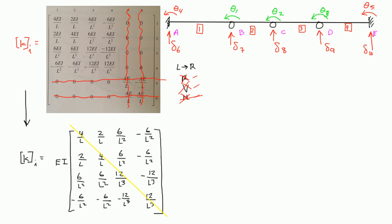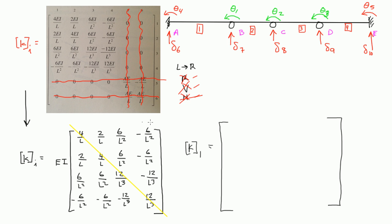So let's start with element one, and please notice how I label the rows and columns when I start doing these matrices — they're very, very important. You do not want to get the numbering wrong. If we do the k matrix for element one, that's subscript one, we're going to have this matrix here. Notice that this matrix is going to have 16 values, because each element has four degrees of freedom, so there are four rows and four columns — four times four is 16. Each one of the four stiffness matrices we're going to do is based off this k sub i template.